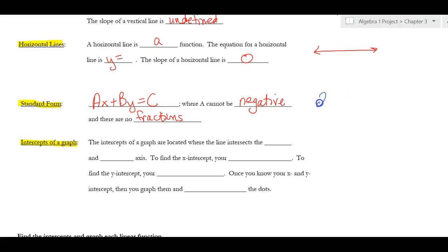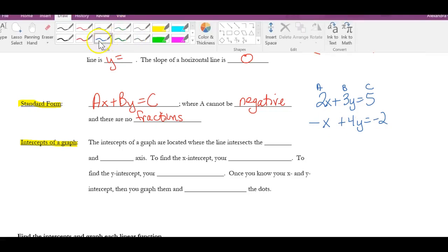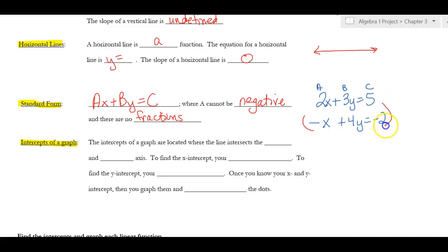For example, 2x + 3y = 5 is in standard form: 2 is A, 3 is B, and 5 is C. If I have negative x + 4y = negative 2, this is not in standard form yet. To fix it, I multiply everything by negative 1, giving me positive x − 4y = 2. Now I have my A, B, and C.